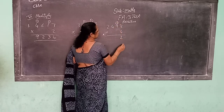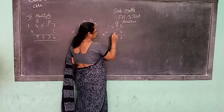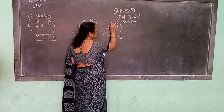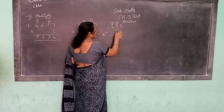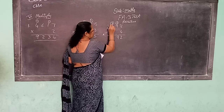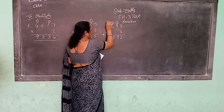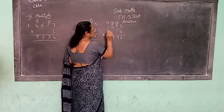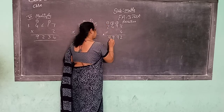4, 2's are 8. 1 carry. 4, 2's are 8. 8 plus 1, 9.